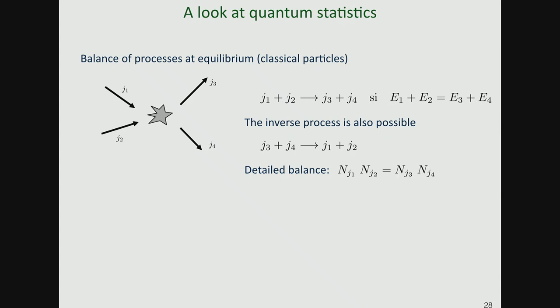I'd like to convince you that the Bose-Einstein law contains this classical field analysis. I'll start by deriving the Boltzmann law by looking at collision processes in a gas at equilibrium. I can have two incident particles with energies associated to states g1 and g2 — e1 and e2 — undergo a collision to produce g3 and g4, so long as e1+e2 = e3+e4. The inverse process is also possible.